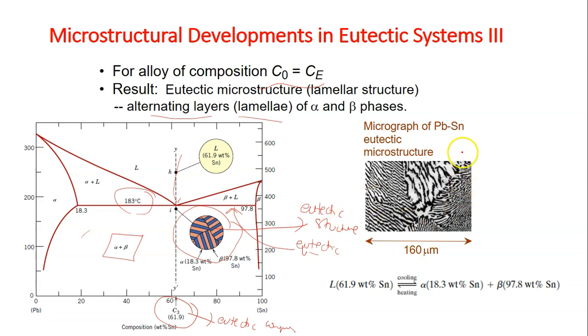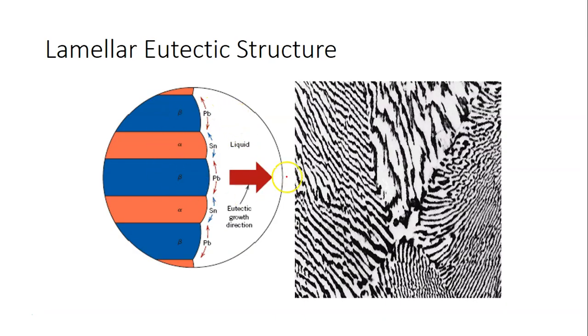This is a micrograph of the lead and tin eutectic microstructure taken by electron microscopy. This figure shows the lamella eutectic structure which happens at the eutectic point. This lamella structure actually shows the beta, alpha, beta, alpha eutectic layers.